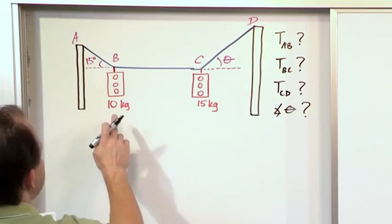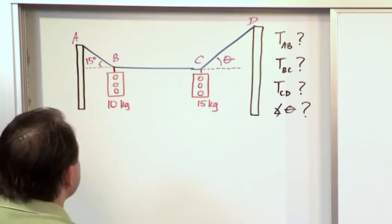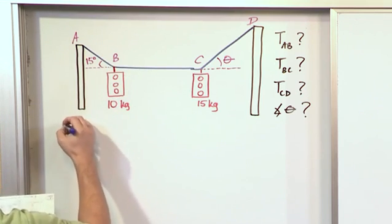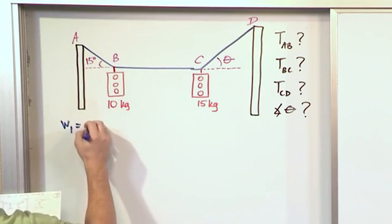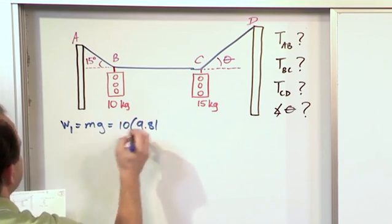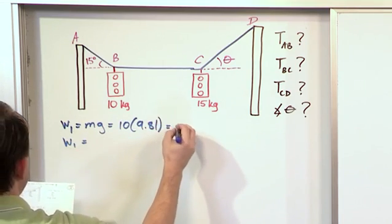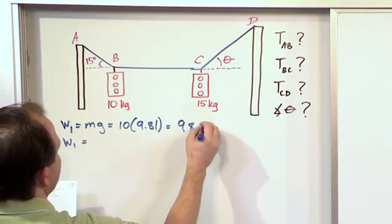But before we do that, what is the force acting down on this? I can do that in probably blue a little bit better. So I'll say weight one is mass times gravity, which is 10 kilograms times 9.81. So weight one is 98.1 newtons.